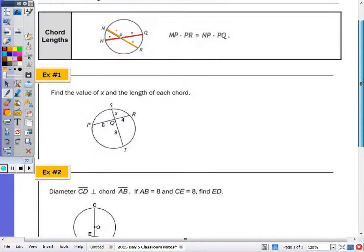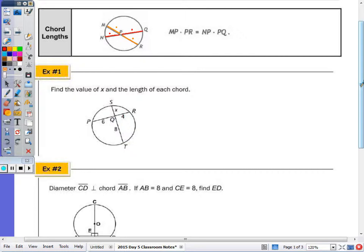In example number one, find the value of x and the length of each chord. So I have the chord PR, so the product of the segments of that chord, 6 times 4, is equal to the product of the segments that make up chord ST, so 8 times x. 24 equals 8x, and x is equivalent to 3.